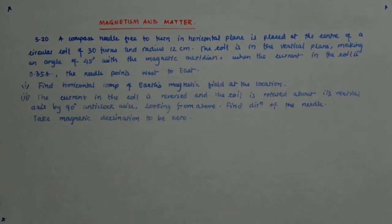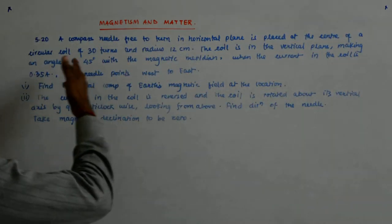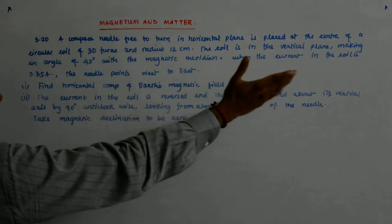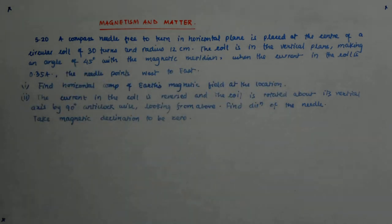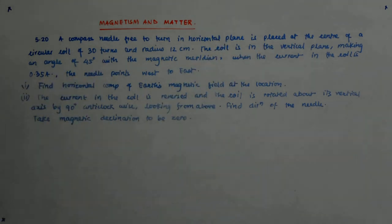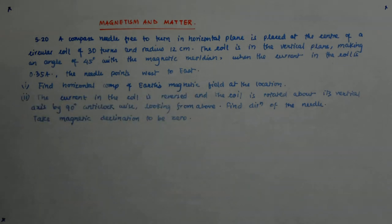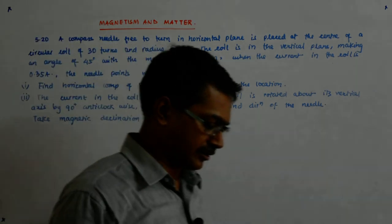So let us try to solve this problem. A compass needle free to turn in a horizontal plane is placed at the center of a circular coil of 30 turns, radius 12 centimeters. The coil is in a vertical plane making an angle of 45 degrees with the magnetic meridian. When the current in the coil is 0.35 amperes, the needle points west to east. Find the horizontal component of earth's magnetic field at the location.